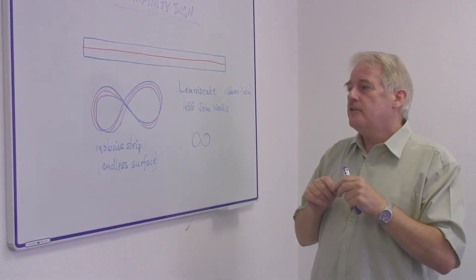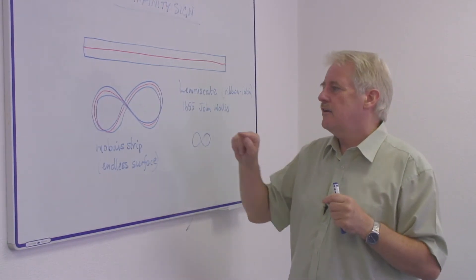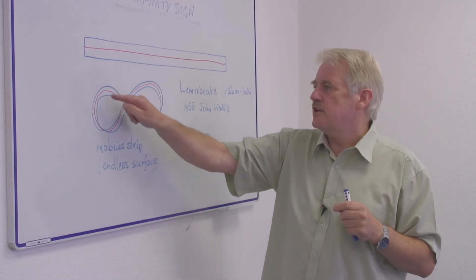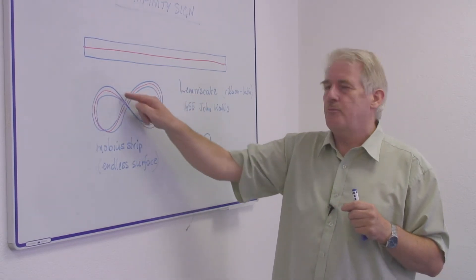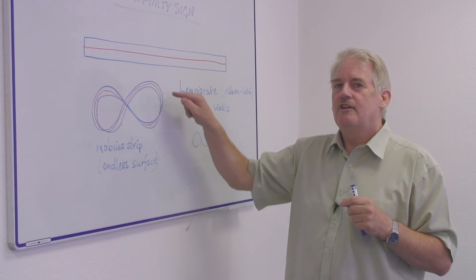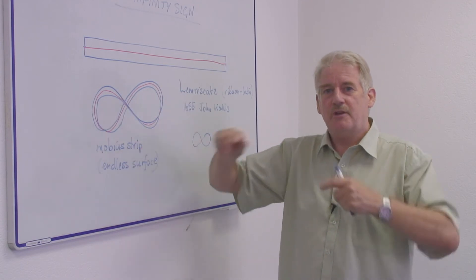You will find that you can trace your red line continuously round the object without ever stopping, because that line transfers from one side to the other because you have twisted it.